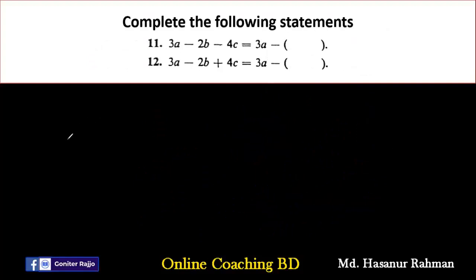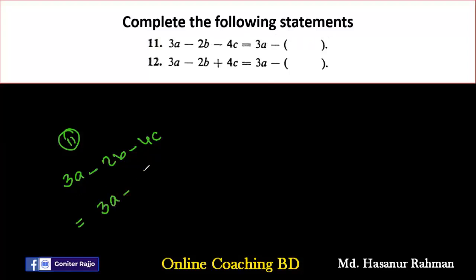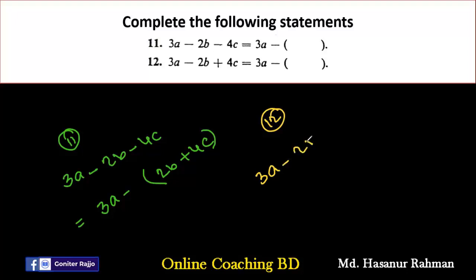Now number 11. We have to complete the following statements, meaning we need to add brackets. Number 11: 3a minus 2b minus 4c. After the minus sign there is a bracket, so: 3a minus (plus 2b plus 4c), because minus 2b divided by minus gives plus 2b, and minus 4c divided by minus gives plus 4c.